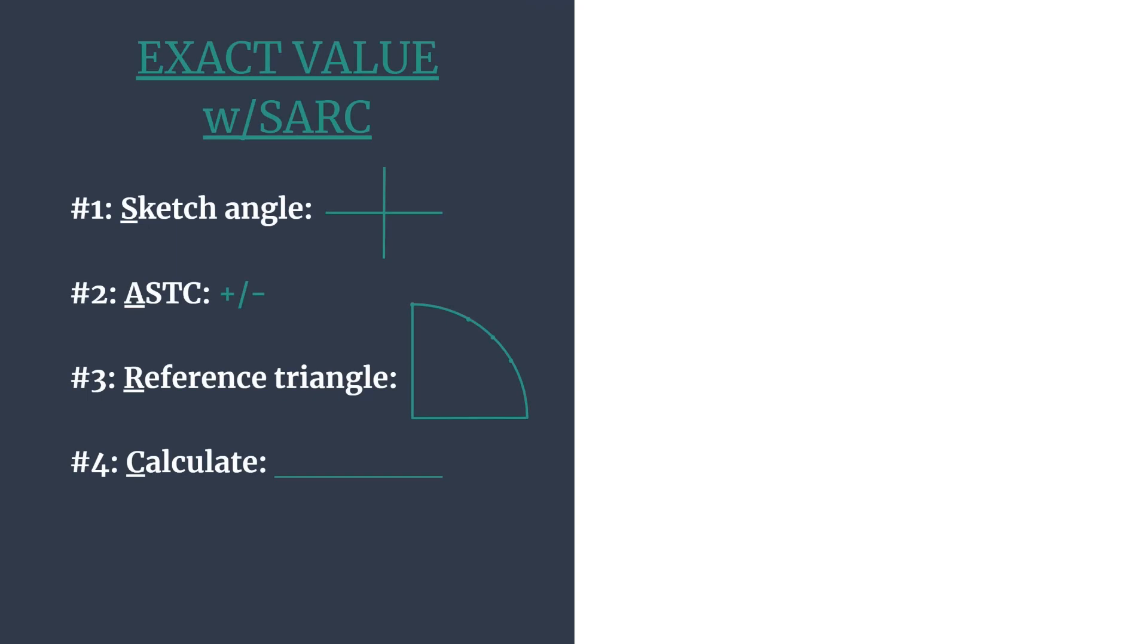SARC is just an acronym to help you keep all of your work organized. The S stands for sketching the angle's terminal side. The A stands for ASTC which will help you find which trig functions are positive in each quadrant. R stands for reference triangle so you'll find your reference angle and the special right triangle and coordinates that go with that, and then C, calculate. You'll calculate the trig ratio.